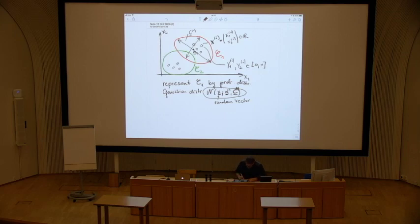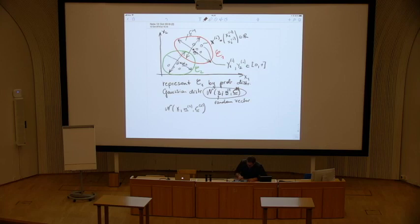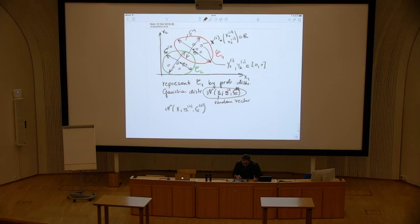We do the same thing for another probability distribution for cluster two: the mean of cluster two and the covariance of cluster two. So we might have mean m2 and covariance matrix C2. This is just a model — we come up with a model that tries to explain the data we see as realizations or draws from a Gaussian distribution. This model is called a Gaussian mixture model. So we model the data as draws from a multivariate normal distribution, to be precise.